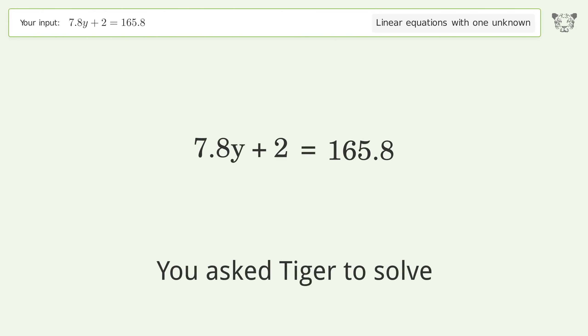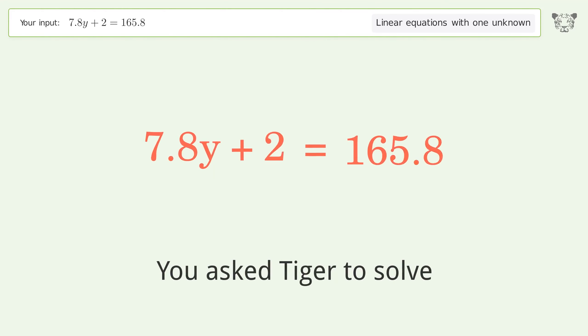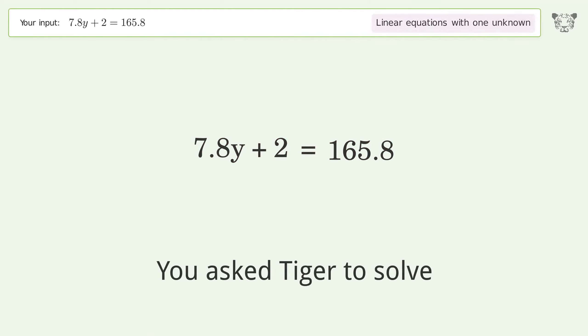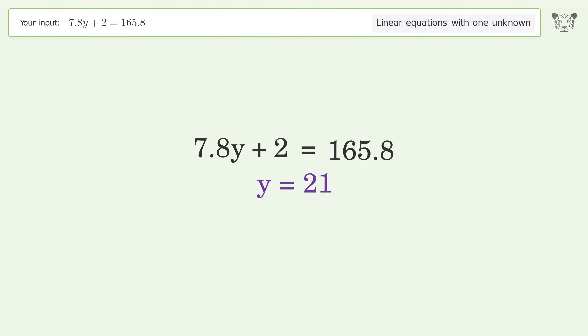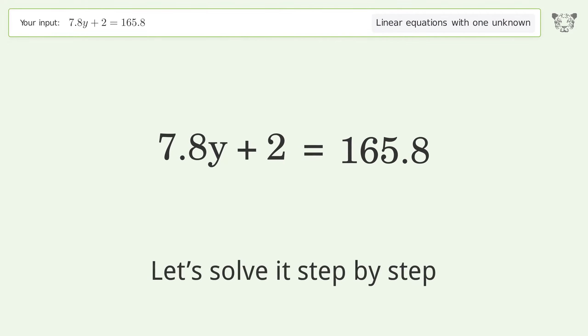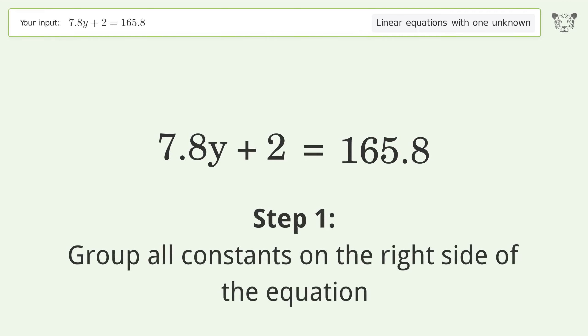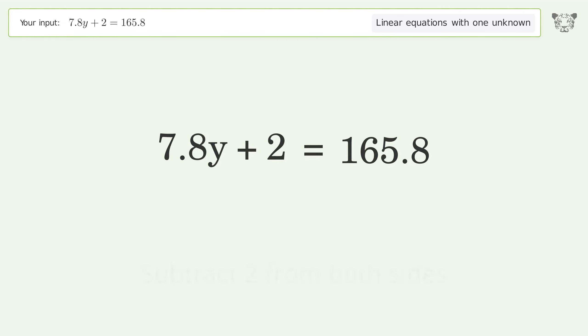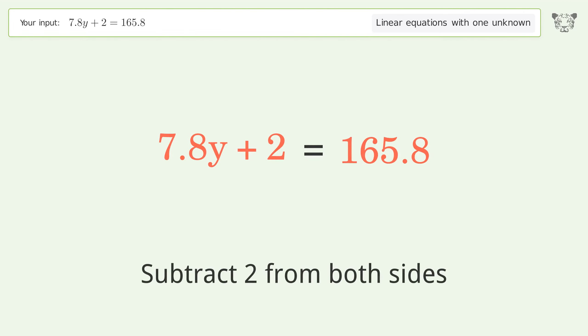You asked Tiger to solve this — it deals with linear equations with one unknown. The final result is y equals 21. Let's solve it step by step. Group all constants on the right side of the equation; subtract 2 from both sides.